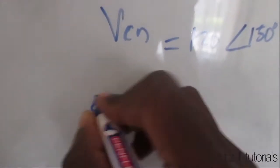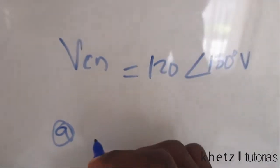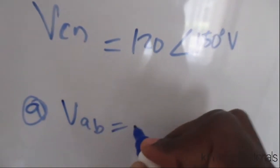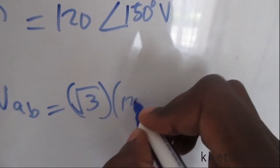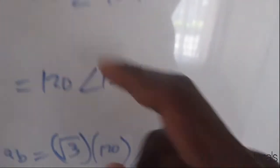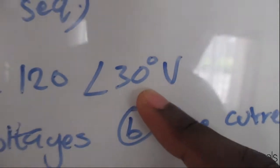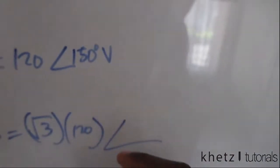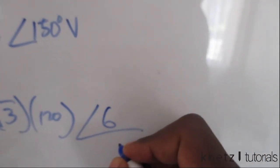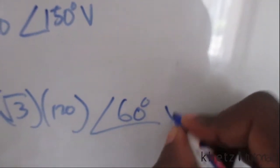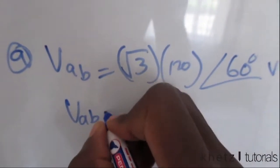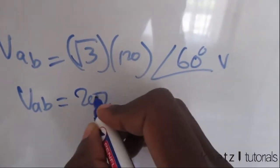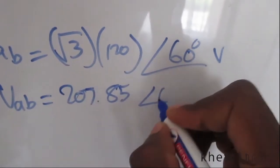For part A, finding our line voltages: V_AB is going to be the square root of 3 multiplied by 120, and for the angle, the line voltage leads the phase voltage by 30 degrees. So we add 30 degrees to 30, giving an angle of 60 degrees. Punching that into the calculator gives us 207.85 volts at an angle of 60 degrees.